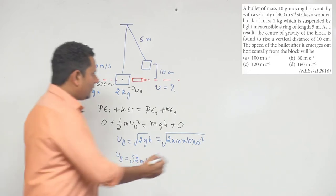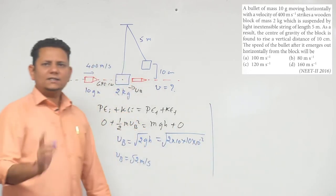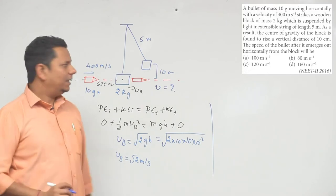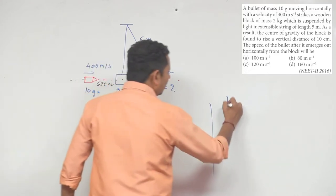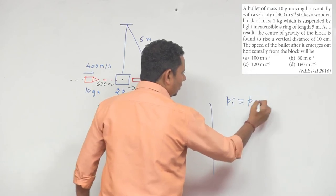Now, since external force is zero, we can conserve momentum. Based on this, initial momentum equals final momentum. We'll consider initial momentum as when the bullet hits the block